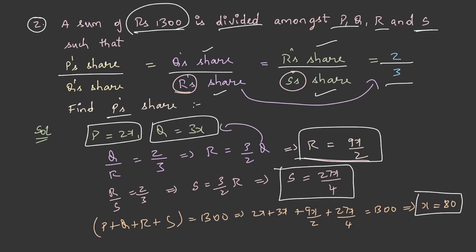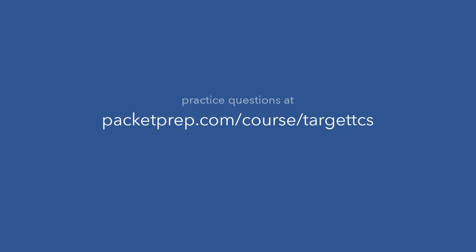Now this is the value of x. But in the question, is asking us to find out P share. Having achieved the value of x, P share will be 2 into 80 which is 160 rupees. This is the value of P share. Keen observation and understanding of questions plays a key role in solving these problems. All the best.